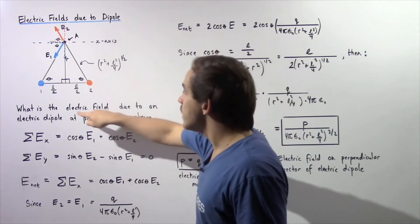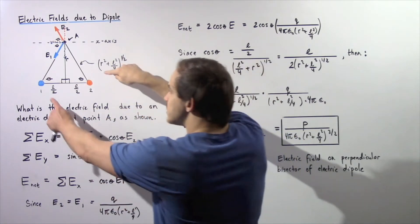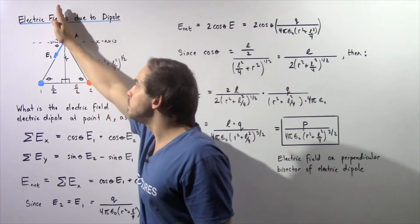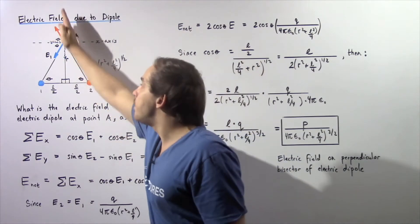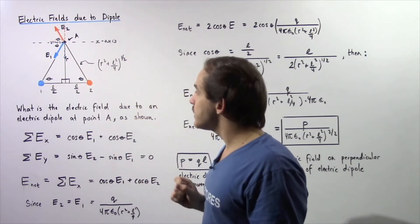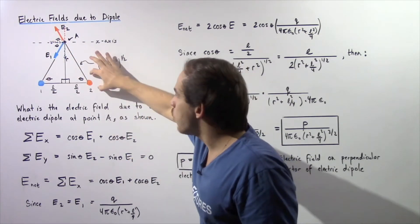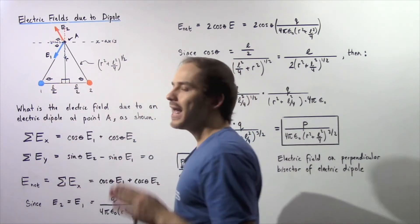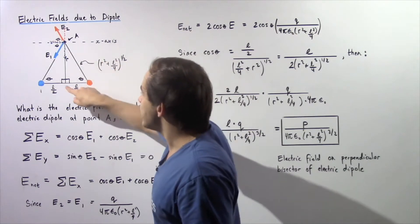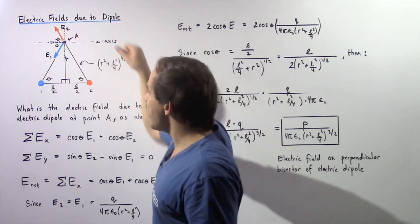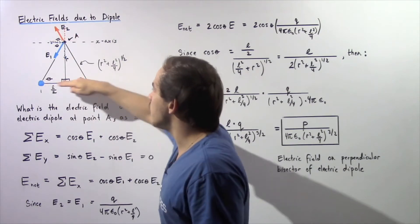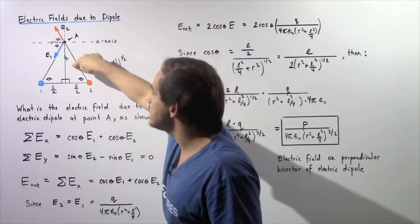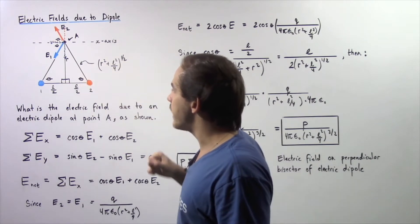We're looking to find the electric field produced by our electric dipole at point A, which lies on the perpendicular bisector line that bisects this distance in half. If the distance between point charge 1 and point charge 2 is given by L, then each of these distances is L divided by 2. The line from the midpoint to point A is the altitude of the triangle, given by distance R. So the height of the triangle is R and the base is L divided by 2.